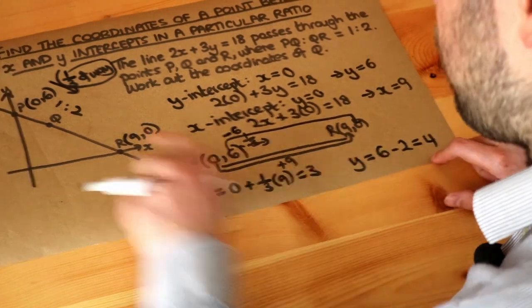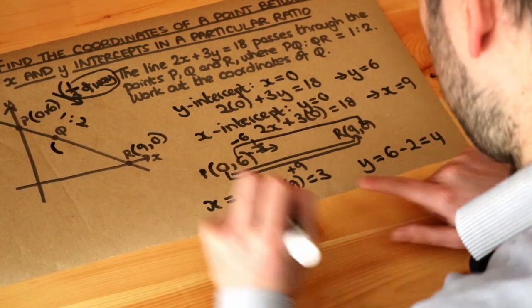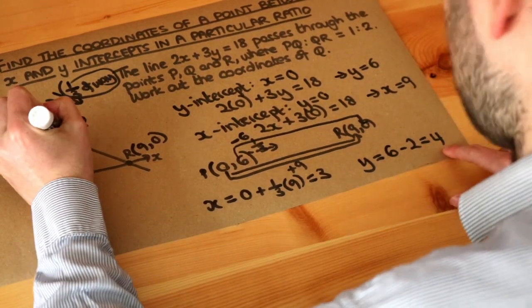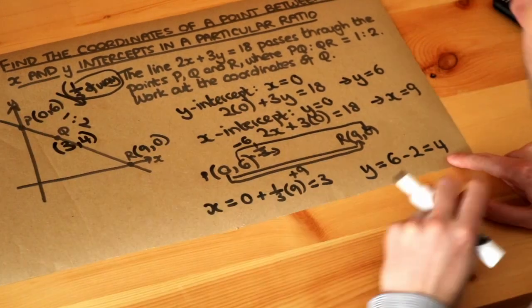And now we've worked out the coordinates of Q. The coordinates of Q are x was 3 and y was equal to 4. And that's the final answer.